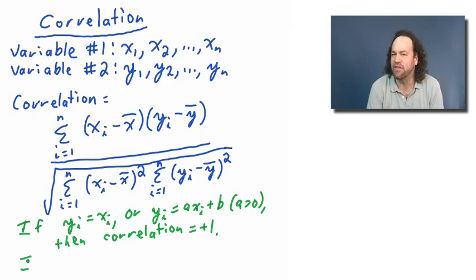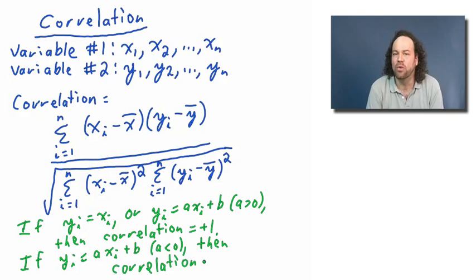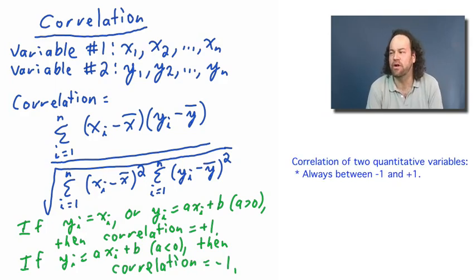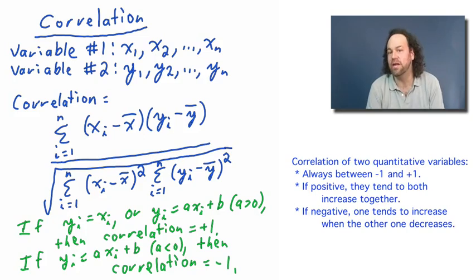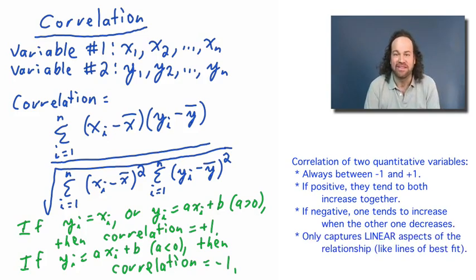On the other hand, if the Yi's were the negatives of the Xi's, or more generally had a negative linear relationship, then the correlation would be equal to minus one, and we'd have a perfect negative correlation. All other correlations would be somewhere in between minus one and one, illustrating the extent to which the variables either increase together if the correlation is positive, or one increases while the other decreases if the correlation is negative. We should also remember that correlation, like lines of best fit, only captures the linear aspects of the relationship between two variables — there are also non-linear effects which aren't captured by the correlation or the line of best fit.